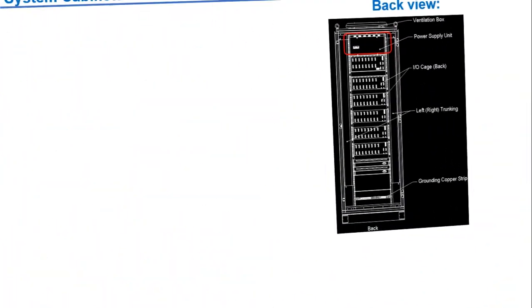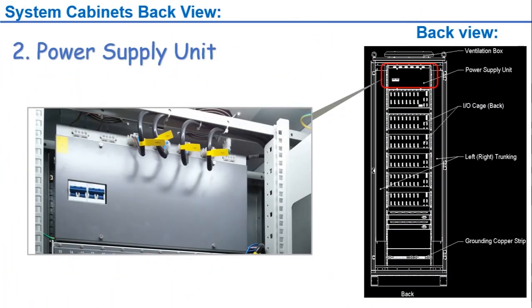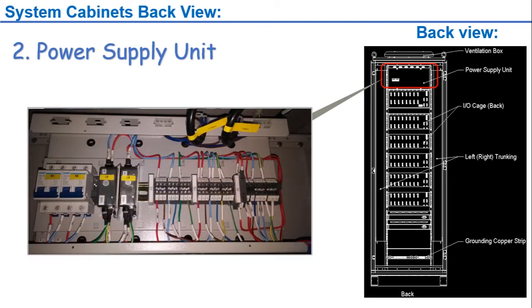The second section in the back view of the system cabinet is the power supply unit. The power supply unit consists of breakers and terminal blocks for AC/DC distribution. We will cover this in detail in the power distribution video.